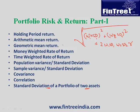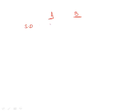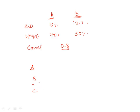Let's do a simplified example. Asset A has standard deviation 10% and asset B has standard deviation 20%. Weight in A is 70% and weight in B is 30%. Correlation coefficient is 0.8. Three options are given: option A is 10.6, option B is 4.4, and option C is some other value. Without calculation, we can directly determine the answer is option C — between those two extremes.